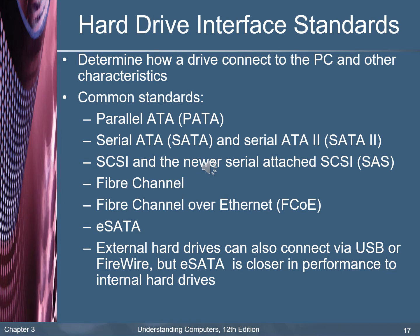Several hard drive interfaces are available — we call them standard hard drive interfaces — which determine how a device can connect to the PC. Common standardized interfaces include: Parallel ATA (PATA), Serial ATA (SATA), Serial ATA 2 (SATA2), SCSI, the newer Serial Attached SCSI (SAS), Fiber Channel, Fiber Channel over Ethernet (FCoE), and eSATA. External hard drives can also connect via USB or FireWire, but eSATA is closer in performance to the internal hard drive.